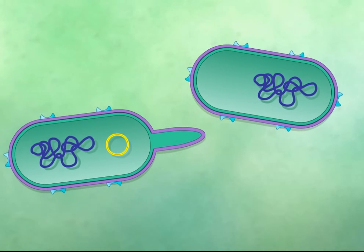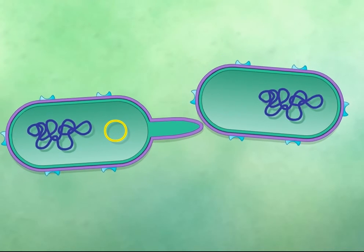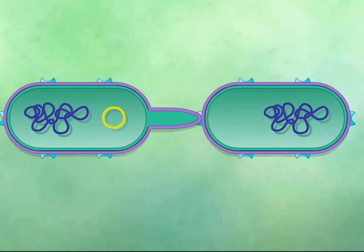The first step in plasmid transfer is contact between the donor and the recipient. The F pilus of the donor cell recognizes and binds to specific receptor sites on the cell wall of the recipient cell.